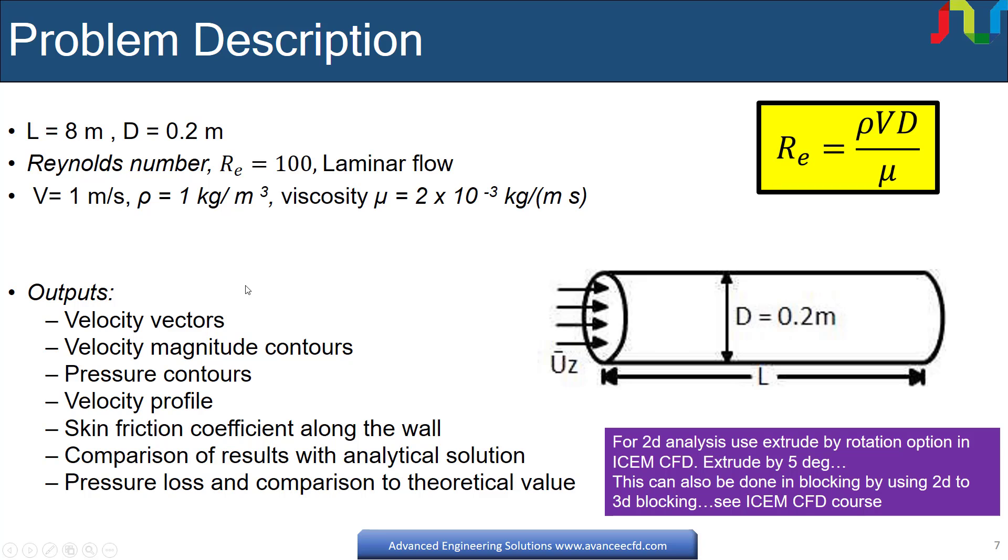Outputs we will show you are velocity vectors, velocity contours, pressure contours, velocity profile for two meshes and comparison to analytical, velocity profile skin friction coefficient along cylinder wall, and comparison with analytical friction coefficient.